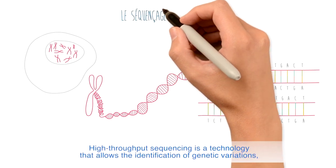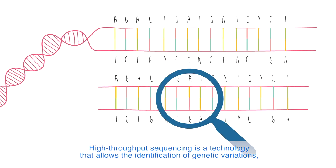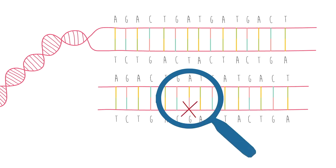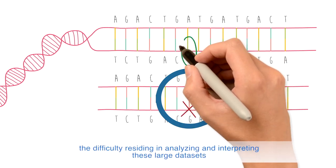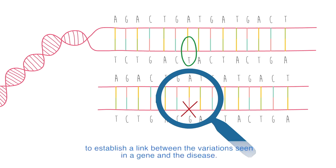High-throughput sequencing is a technology that allows the identification of genetic variations. The difficulty lies in analyzing and interpreting these large datasets to establish a link between the variations seen in a gene and the disease.